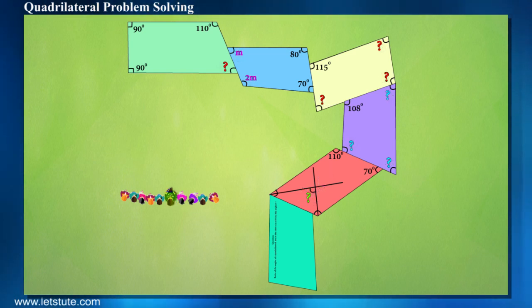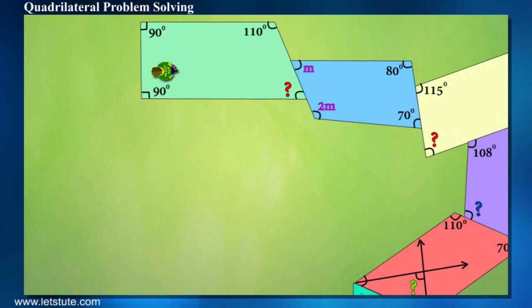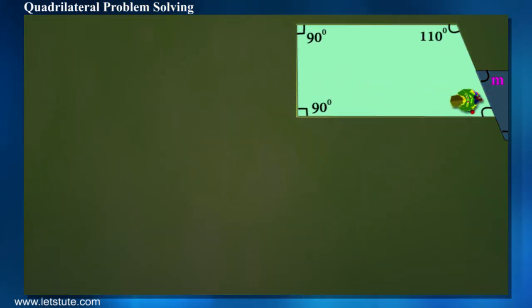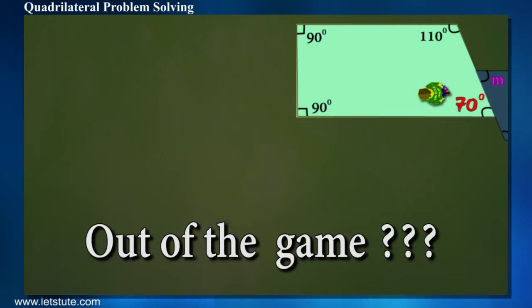So Jack entered the first block. He saw one question mark. He had to find the angle made by walls at this corner. Jack wrote there 70 degrees. So what do you think? Did he go to the next block or was he out of the game?